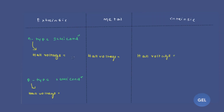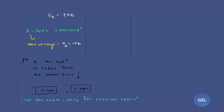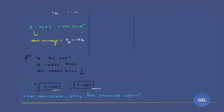Moving on to an important point: for extrinsic semiconductors, it could be N-type or P-type. For N-type semiconductor, the Hall voltage VH is positive, while for P-type semiconductor, VH is negative — if you take the reference from the bottom face. However, this sign convention for Hall voltage is not important for your exam. It is only for practical application or interview questions.